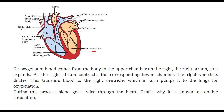Deoxygenated blood comes from the body to the right atrium. As the right atrium contracts, the right ventricle dilates and receives the blood, which in turn pumps it to the lungs for oxygenation. The blood then returns from the lungs back to the heart. Since the heart is involved twice and blood passes through the heart twice during this process, we call it double circulation.